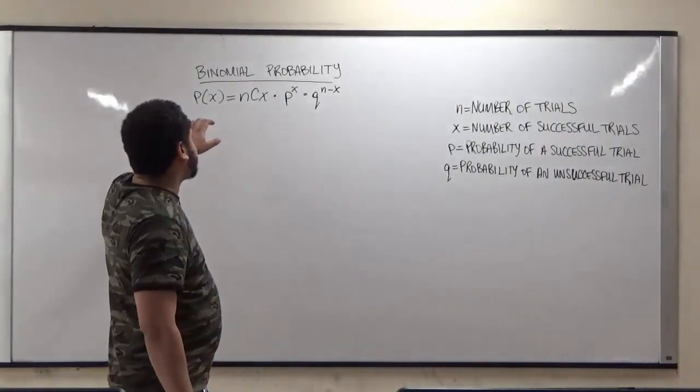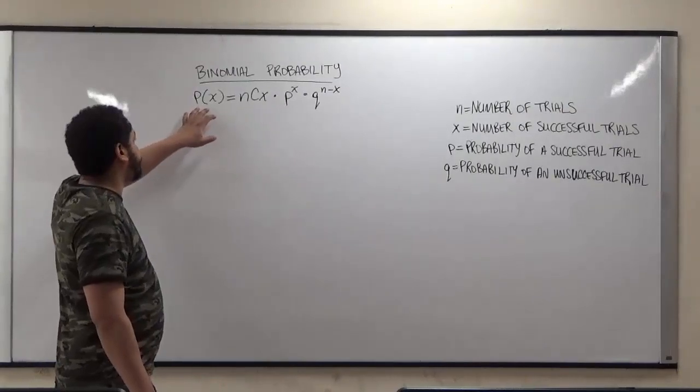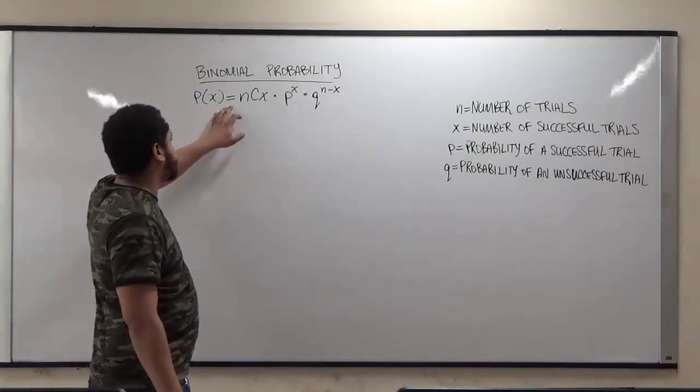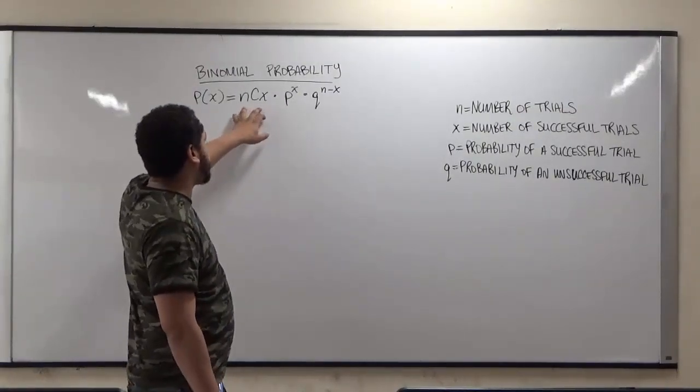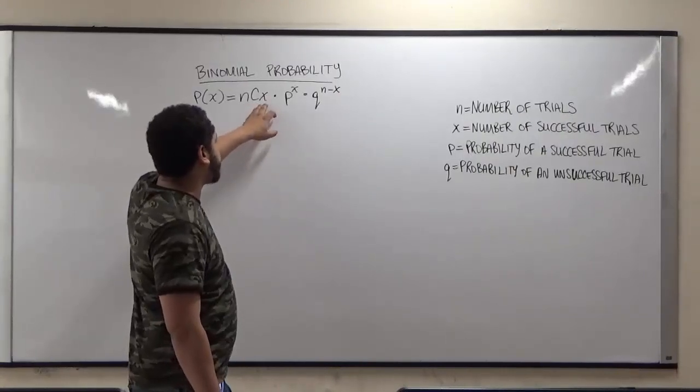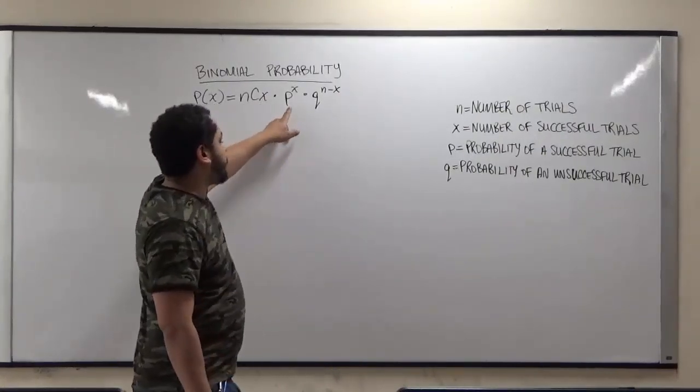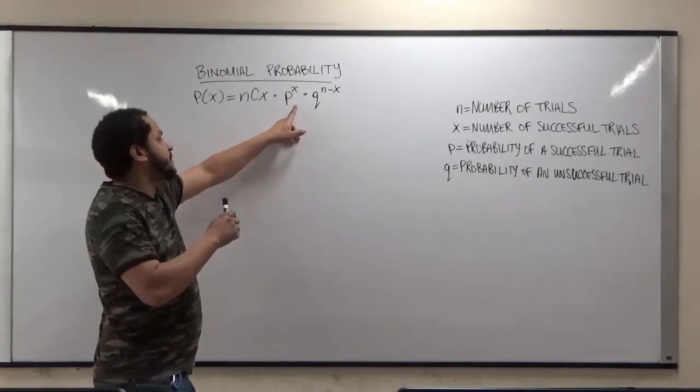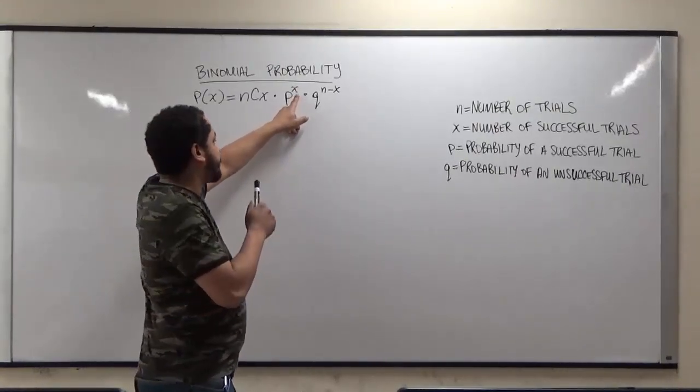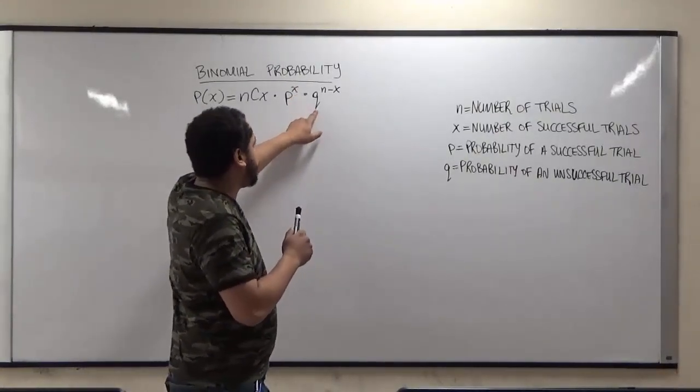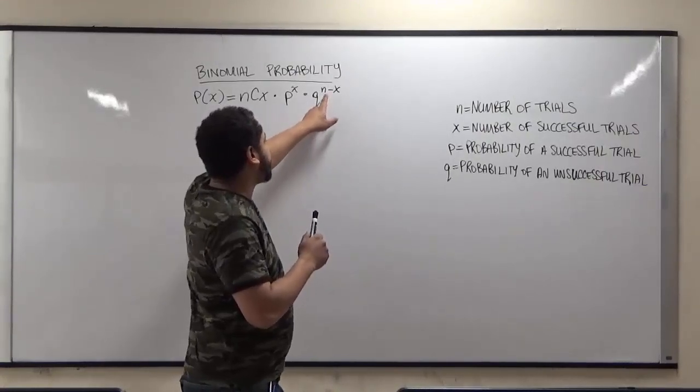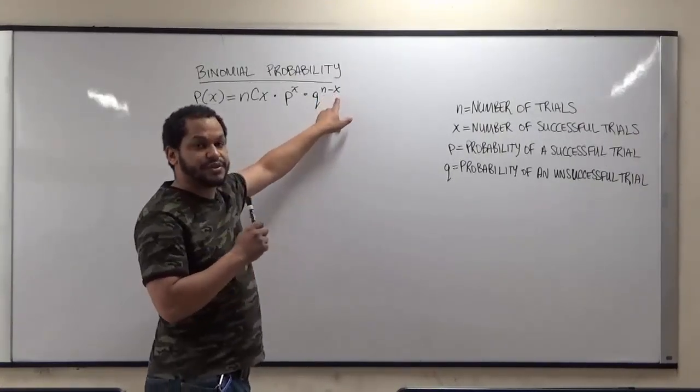Now to do the binomial probability function we have the function P(X) is equivalent to nCx, which is the combination of the number of trials and the number of successful trials, times the probability of a successful trial raised to the power of the number of successful events, times the probability of failure raised to the power of the number of trials take away the number of successful trials.